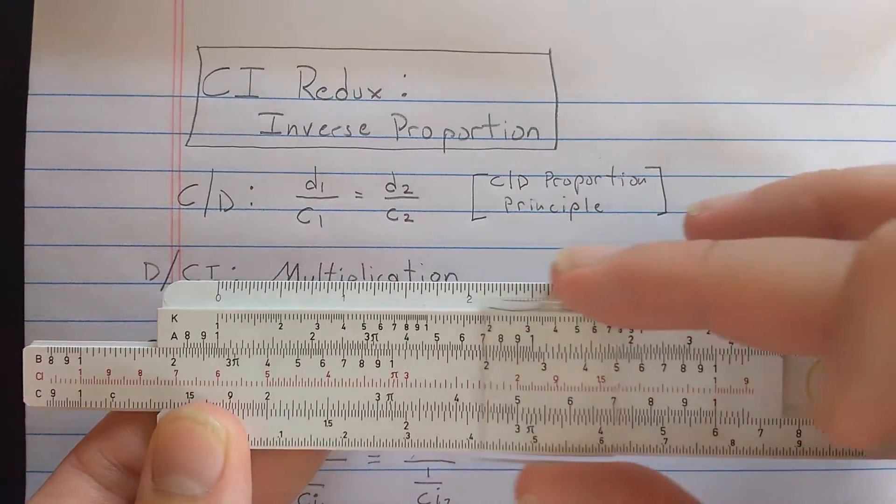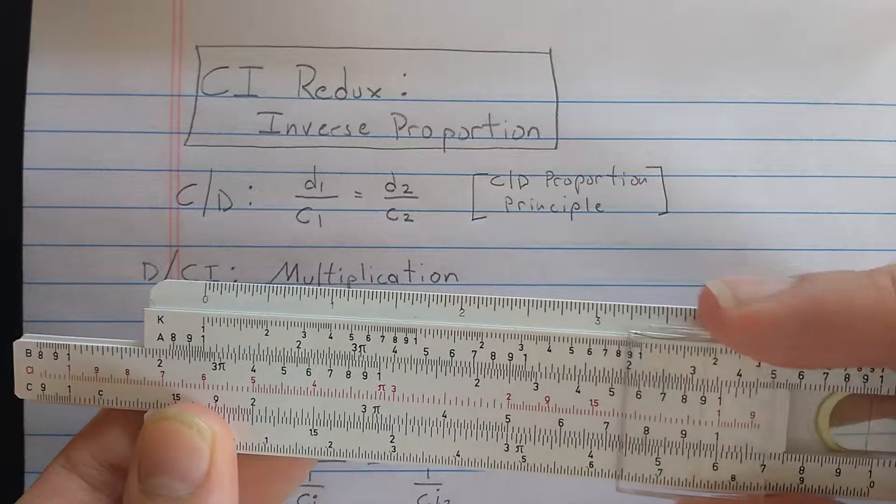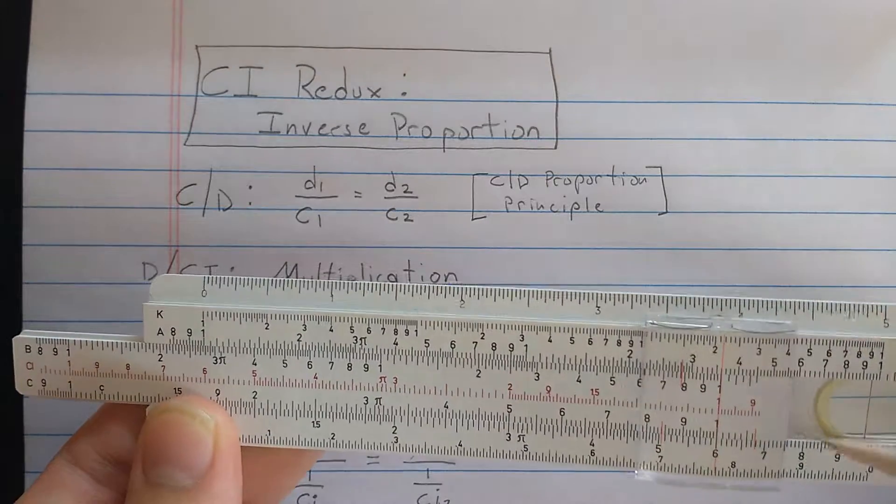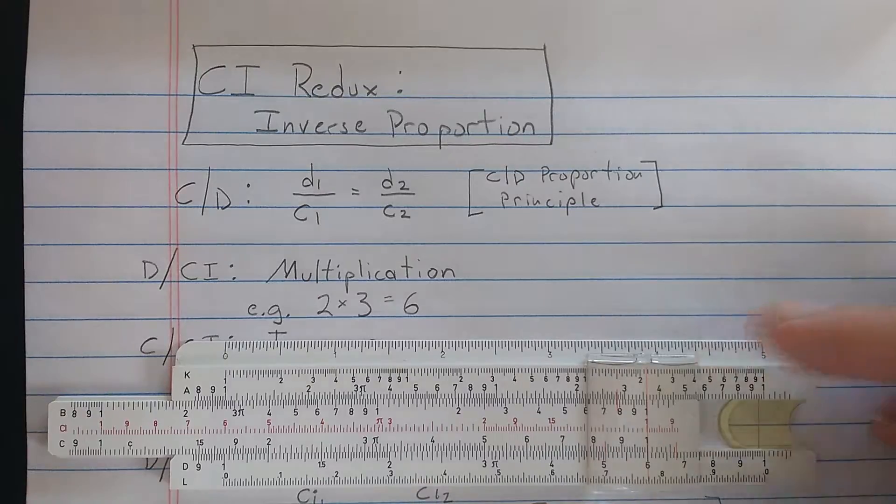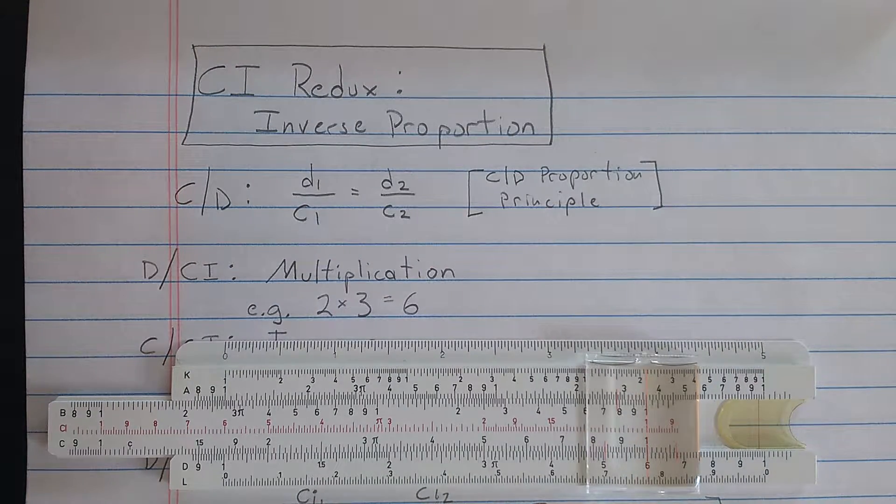So I found 2 on D and 3 on CI. Then, one of the indices of CI is always on scale. So here if I find the index of CI, I read result 6. That's what we said about the CI scale before.